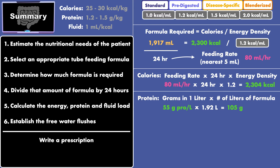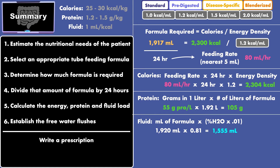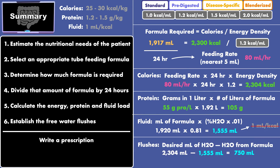For fluid, multiply the milliliters of formula given per day by percent H2O times 0.01. If the amount of fluid does not satisfy the goal, establish free water flushes by taking the desired milliliters of water and subtracting the amount of water provided by the formula. Divide evenly to give every 12 hours, 8 hours, 6 hours, or 4 hours — for example, 250 milliliters every 8 hours.